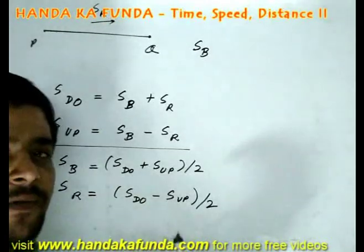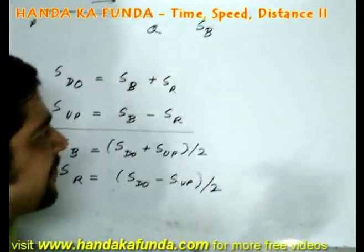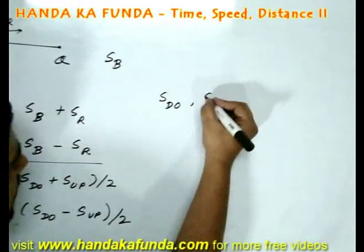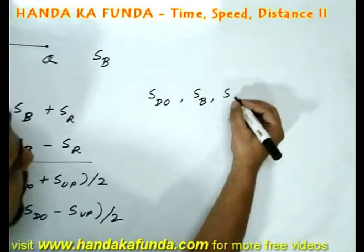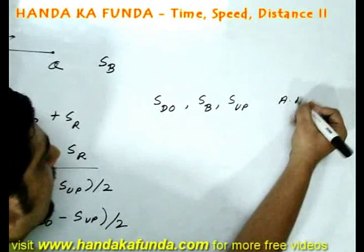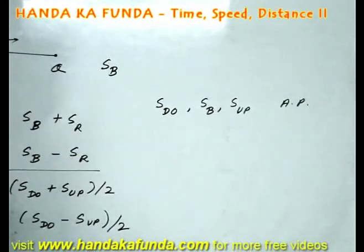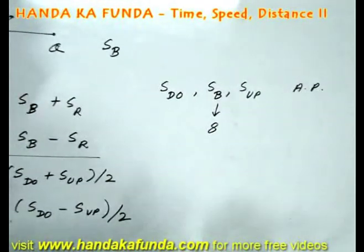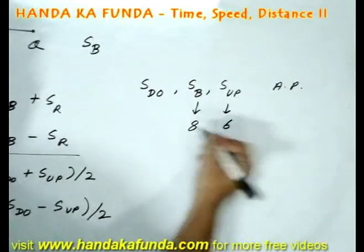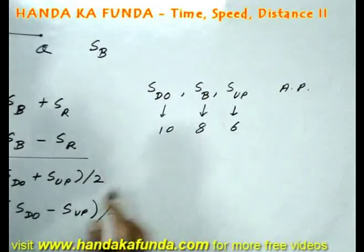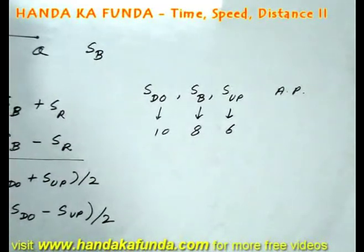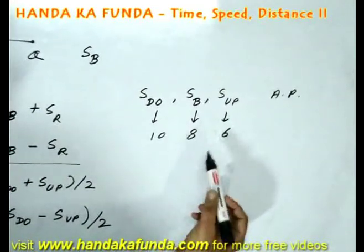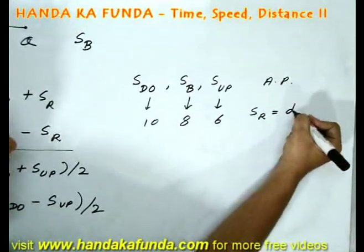Note that the downstream speed will always be more than the upstream speed. Also, the speed of the boat upstream, the speed of the boat in still water, and the speed of the boat downstream are always in an arithmetic progression. For example, if the speed of the boat is 8 meters per second and river speed is 2, then upstream speed is 6 and downstream speed is 10 — they are in an AP, with the common difference being the speed of the river.